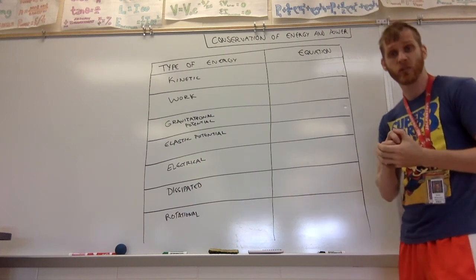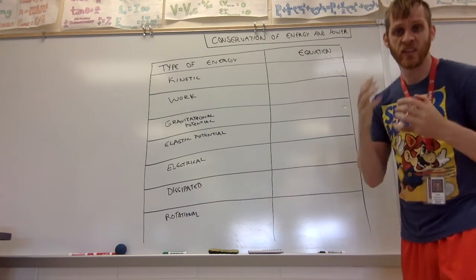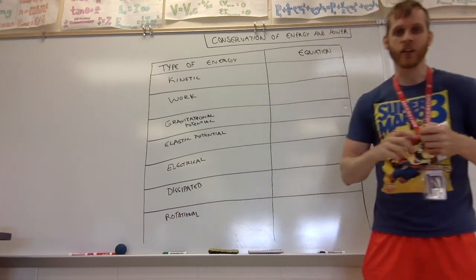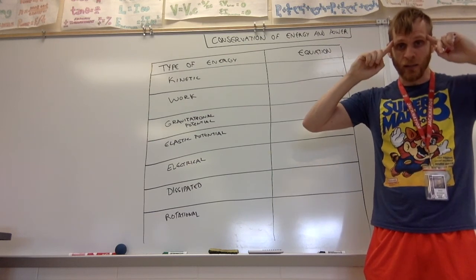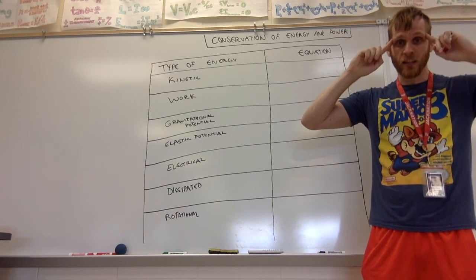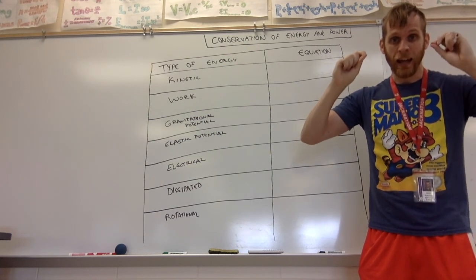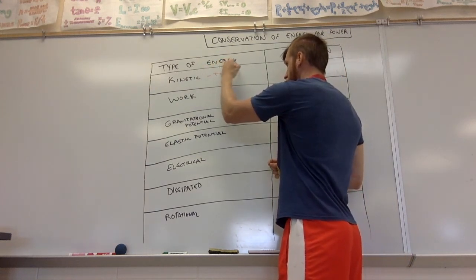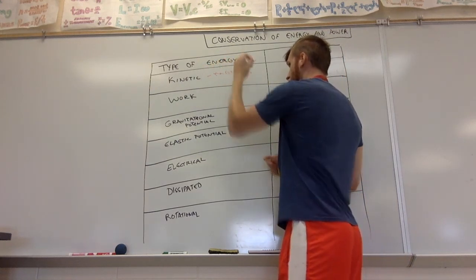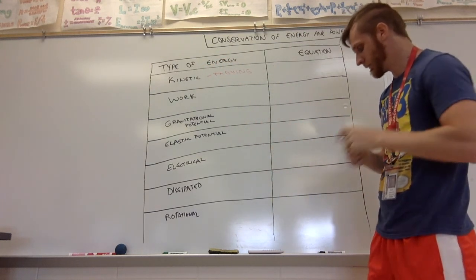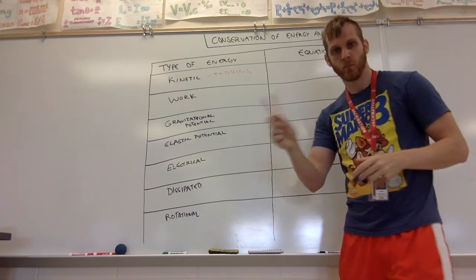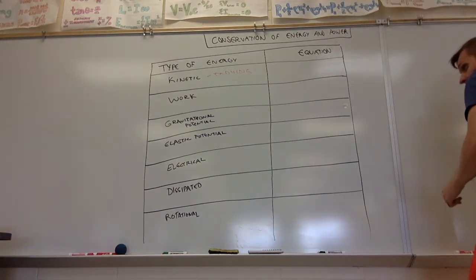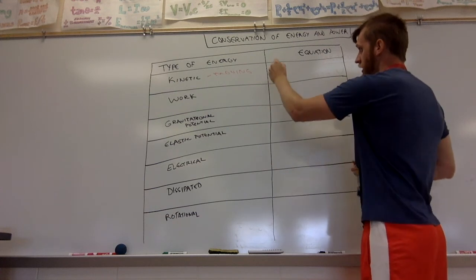The first type of energy we'll talk about is kinetic energy. The way you know that an object has kinetic energy is if it's moving — anything that's moving has kinetic energy. The equation for kinetic energy is one half m v squared.